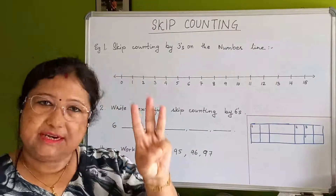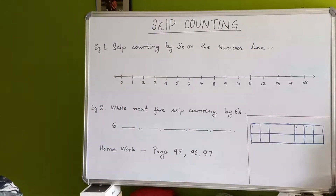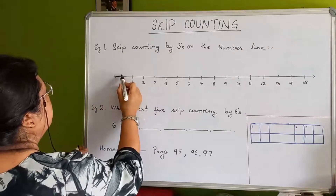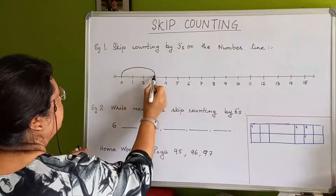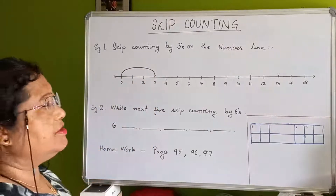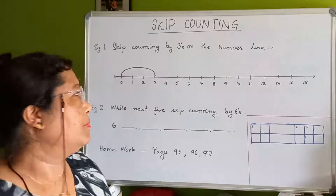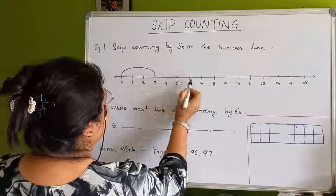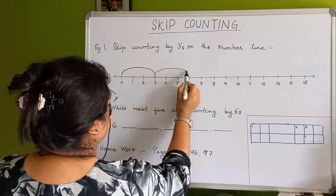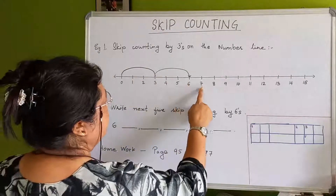On the number line, first you start from zero. We jump three times: one jump, two jump, three — so you land on three. Then again you jump three: one, two, three — so you land on six. Then again jump three: seven, eight, nine.